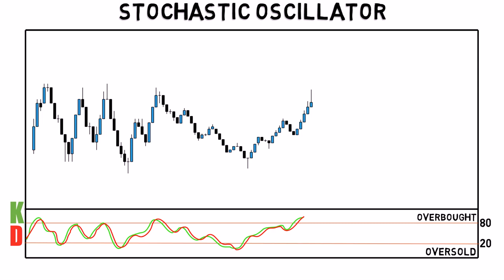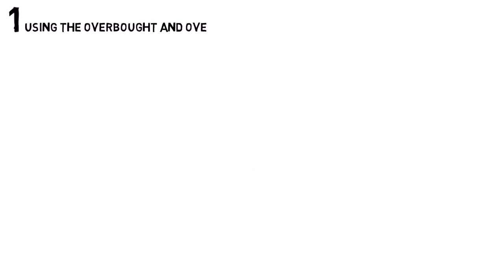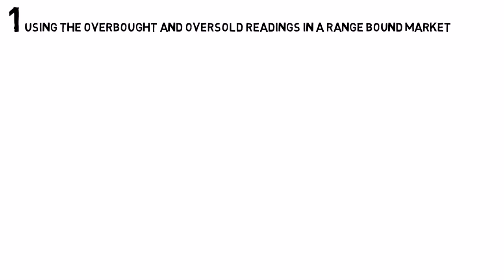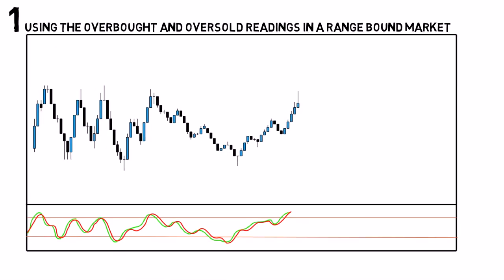So, how to use this in your trading? Using the overbought and oversold readings in a range-bound market: in a range, we buy when the D line is rising out of the oversold area, and we sell when the D line is coming out of the overbought area.